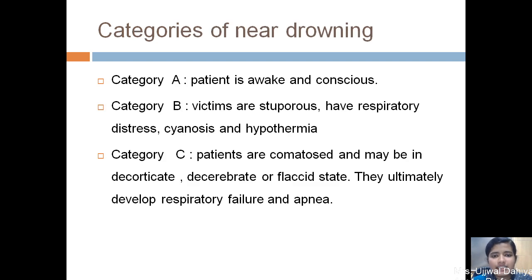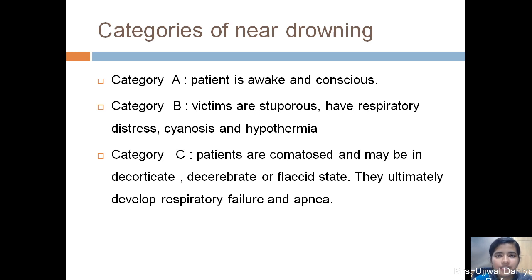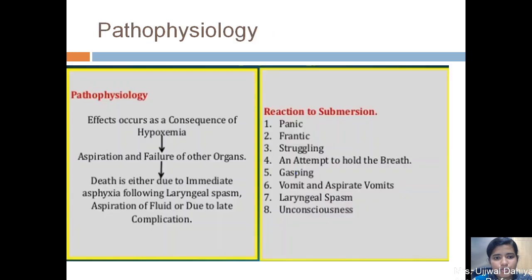There are three categories for near drowning. In category A, patients are awake and conscious. In category B, victims are stuporous, have respiratory distress, cyanosis, and hypothermia. In category C, patients are comatose and may be in decorticate, decerebrate, or flaccid state. They ultimately develop respiratory failure and apnea because of an insult to the brain, leading to decorticate and decerebrate posture.